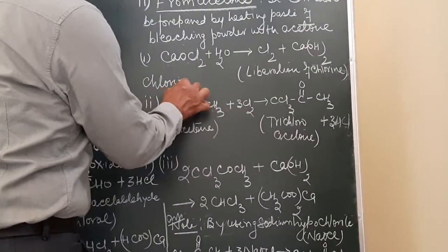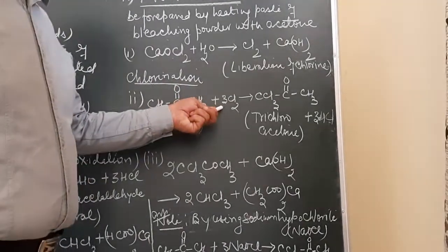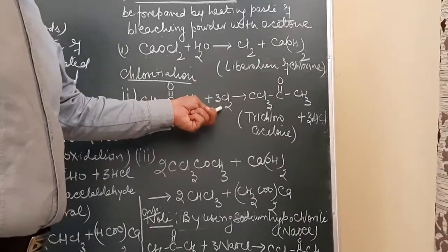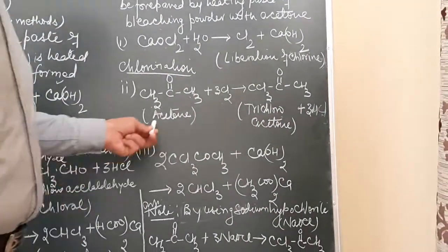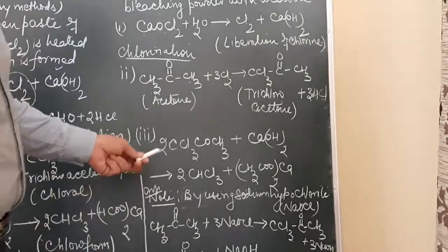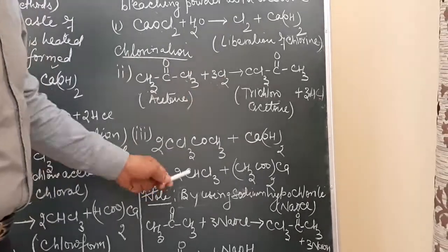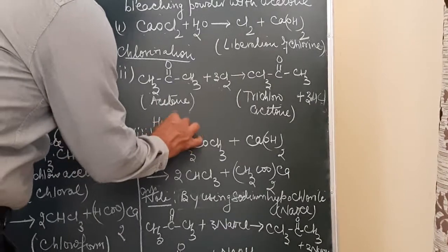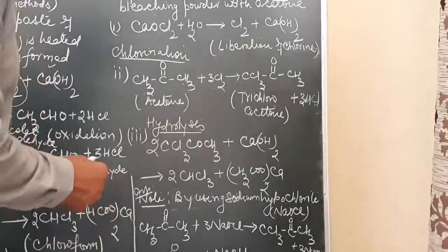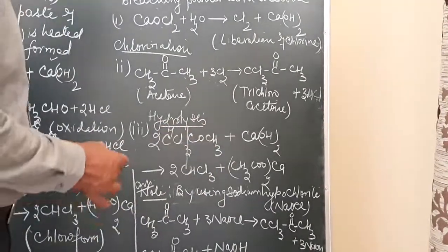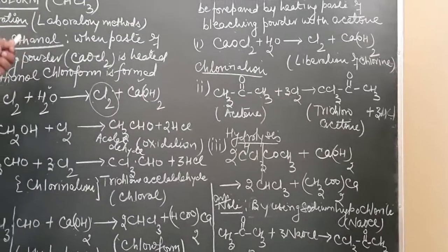The function of the liberated chlorine here is to help in the chlorination of acetone. When acetone reacts with chlorine, the hydrogen atoms are substituted by chlorine, resulting in the formation of trichloroacetone. In the second step — the hydrolysis step — trichloroacetone is hydrolyzed with calcium hydroxide and results in the formation of chloroform, with calcium acetate as the other product.